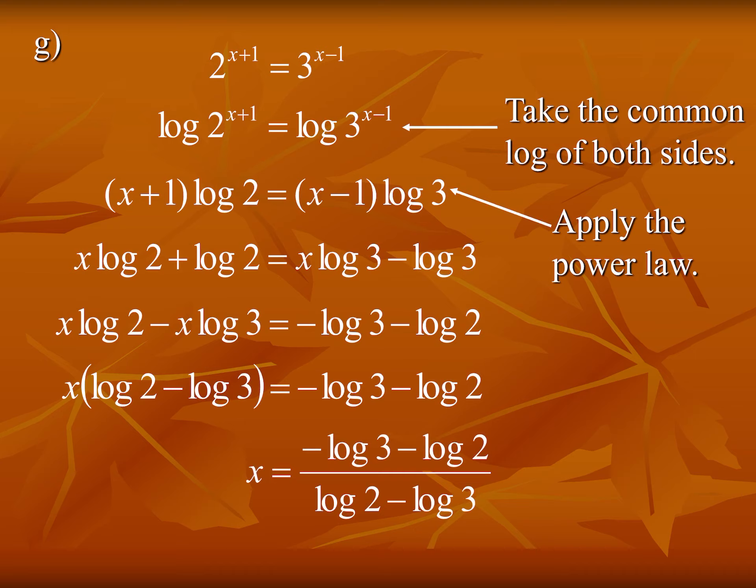Factor out x on the left side, then divide by that bracket to isolate x. You get x = (−log 3 − log 2) ÷ (log 2 − log 3). To type this in your calculator, use brackets around the numerator and denominator, or convert to decimals first. You should get approximately 4.419. Same basic strategy: take common logs of both sides, bring exponents down using log law 3, then isolate x.